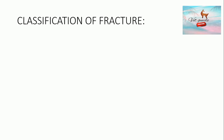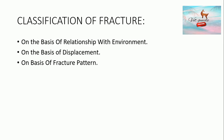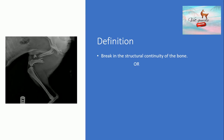A fracture can be differentiated on various bases. A fracture can be classified on the basis of relationship with environment, on the basis of displacement, and on the basis of fracture pattern. We will see each classification in detail one by one. A fracture can be defined as a break in the structural continuity of the bone, or as a discontinuity in the continuity of the bone.